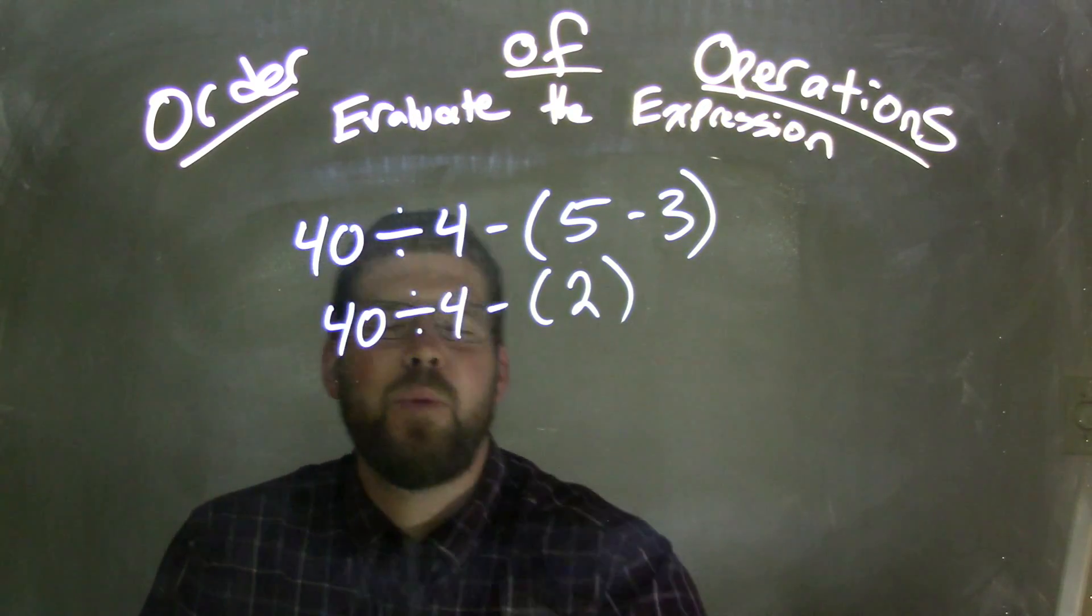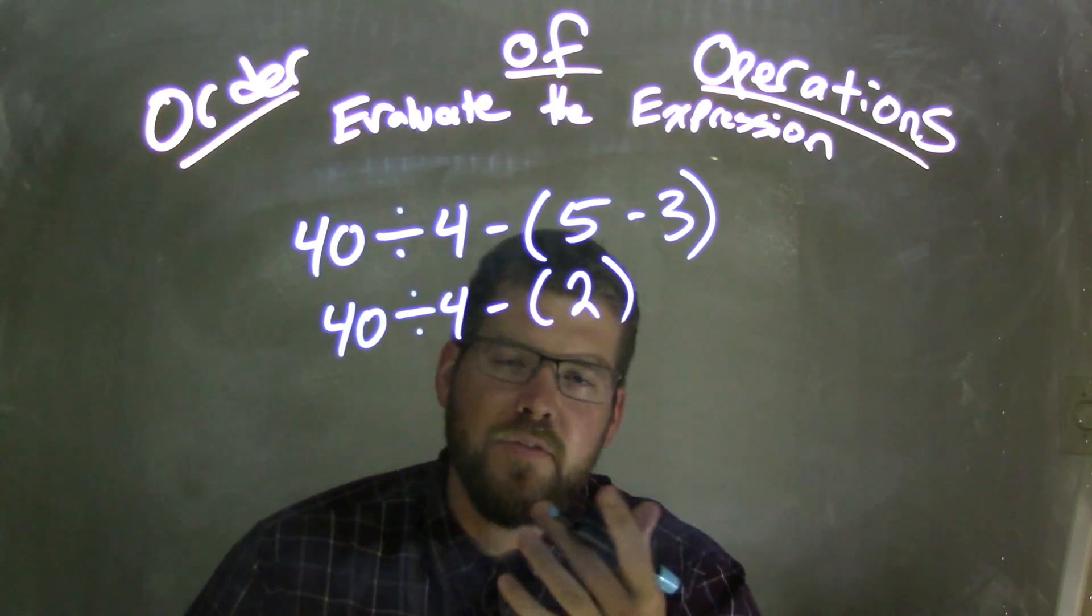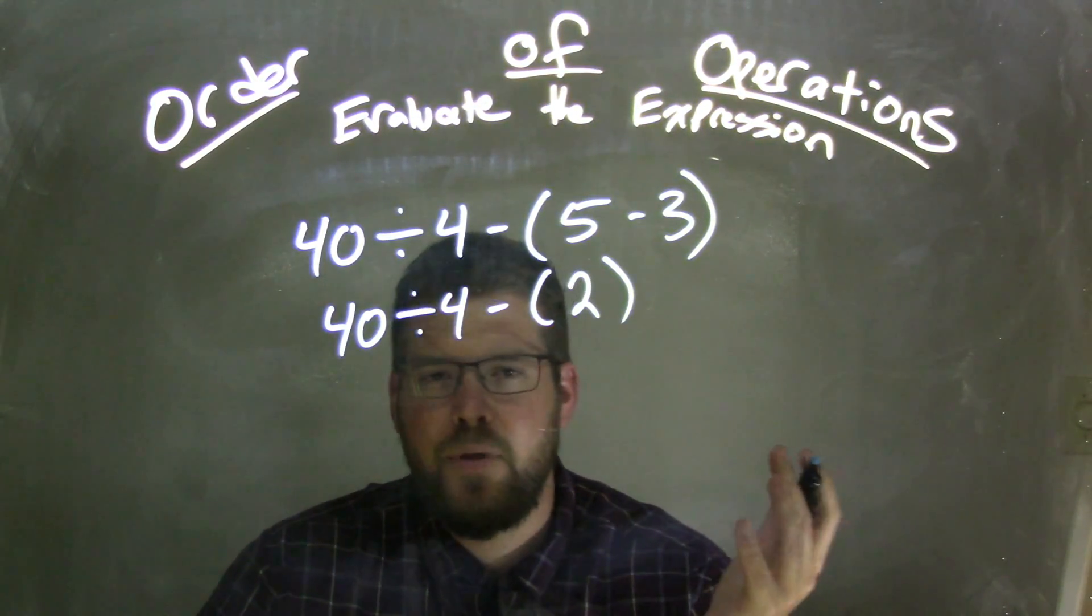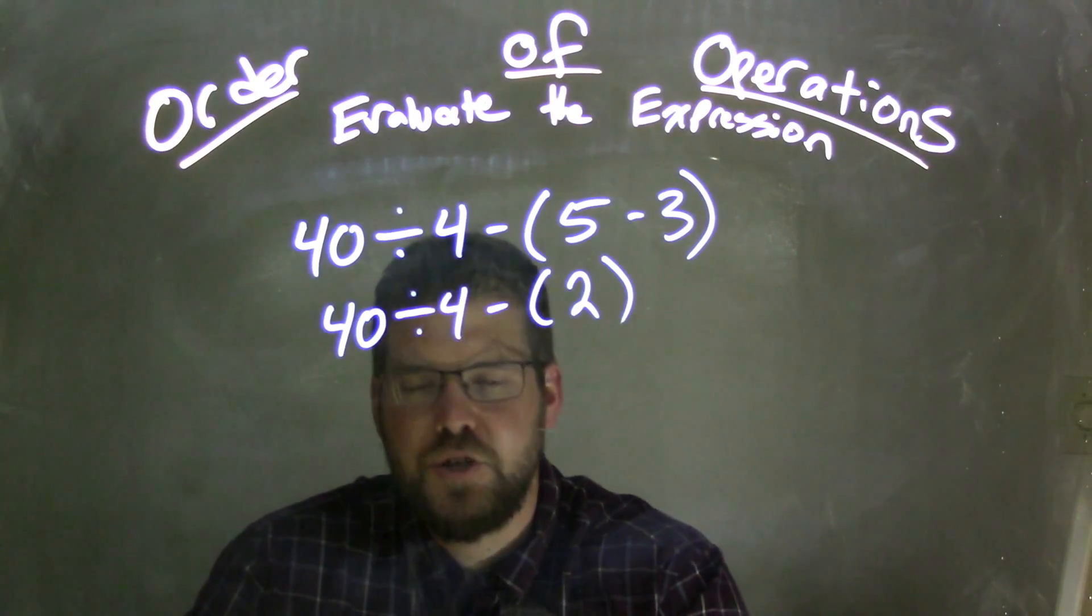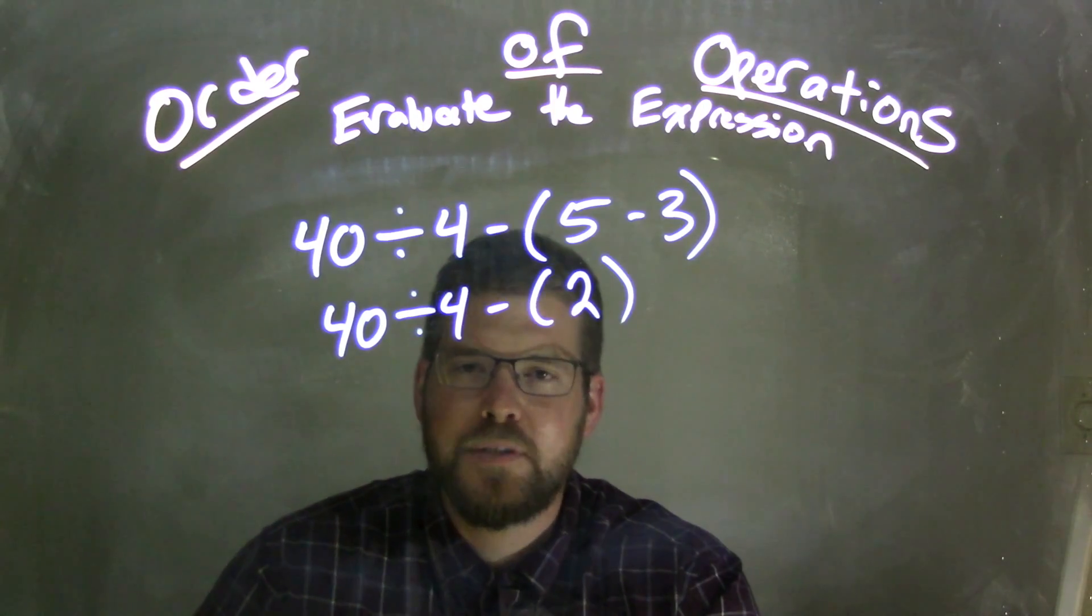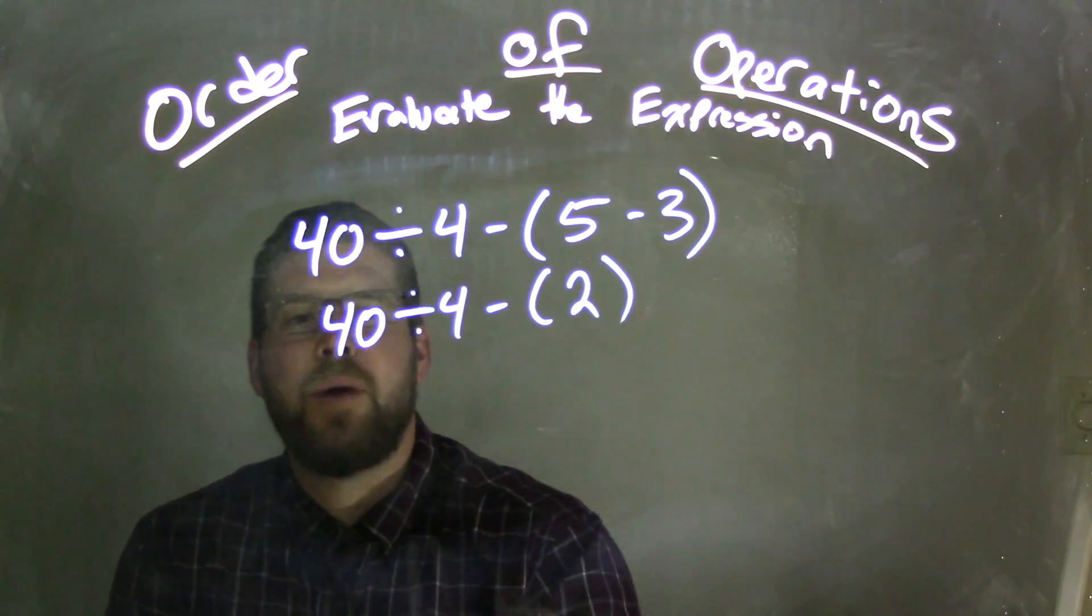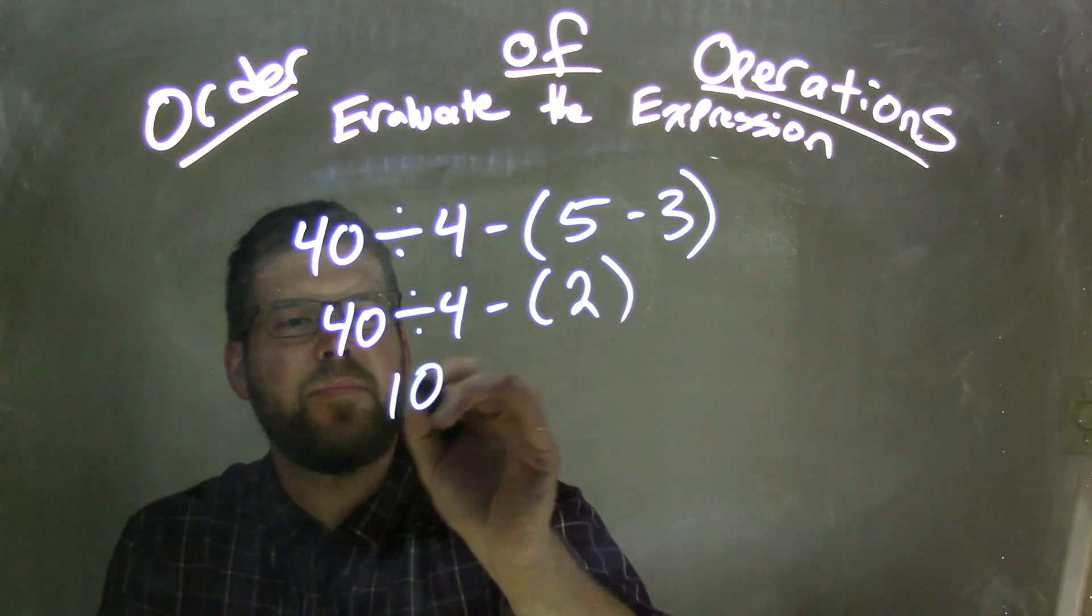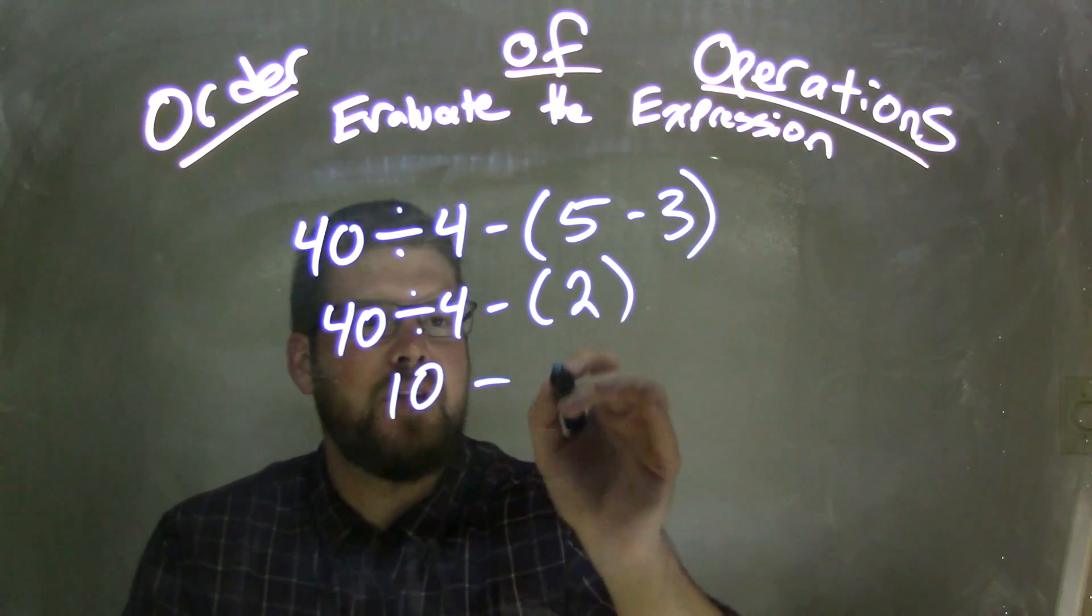We have division, and we have subtraction, and parentheses. But there's nothing left inside the parentheses besides the number 2. So now we have to deal with division, right? Division comes before subtraction. So 40 divided by 4 is 10 minus what's left is 2.